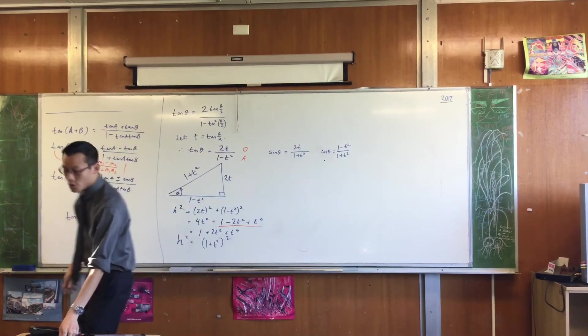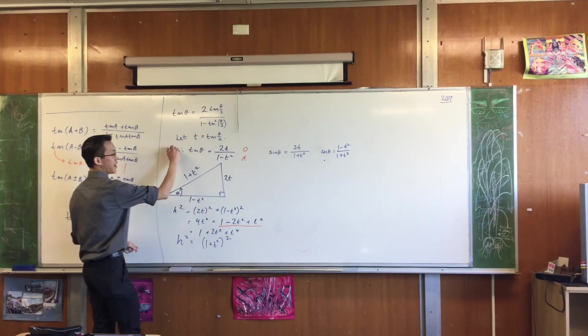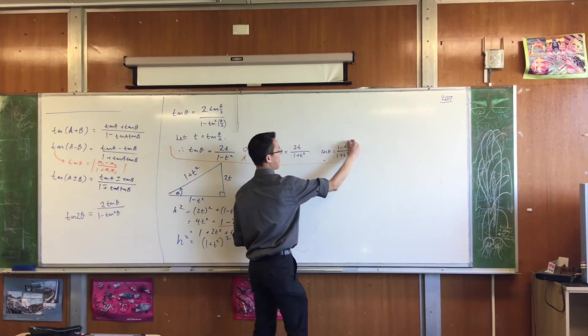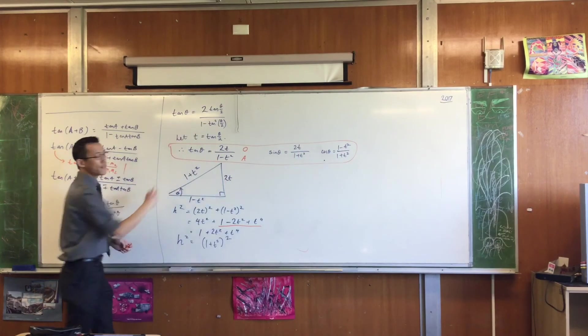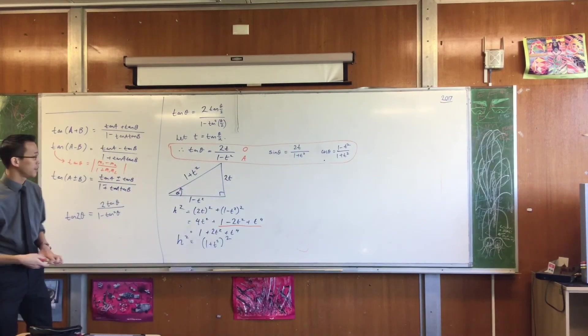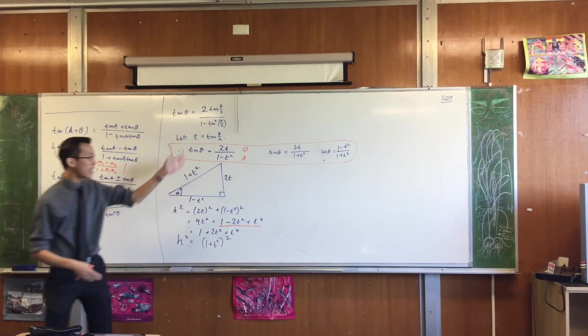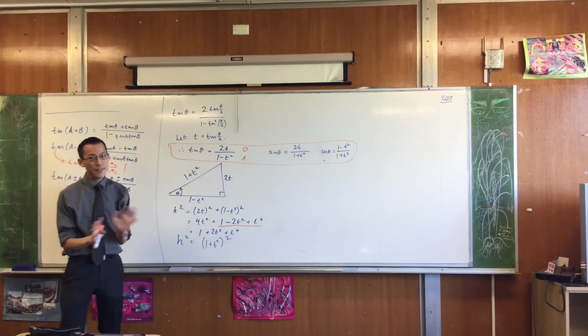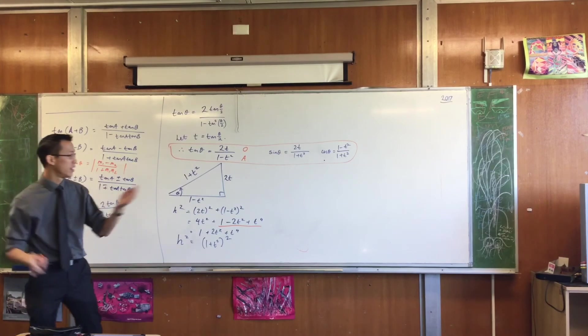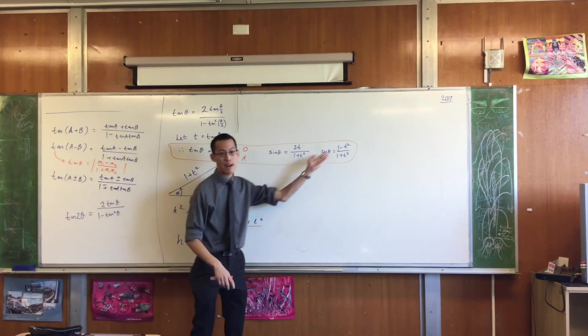So what we've now done is we've said, and you can put a nice big box around this. We have a new way to reframe all of the trigonometric functions. You can deal with all of them, sine, cos, and tan, without ever talking about sine, cos, and tan. You can just deal with them as algebraic objects.